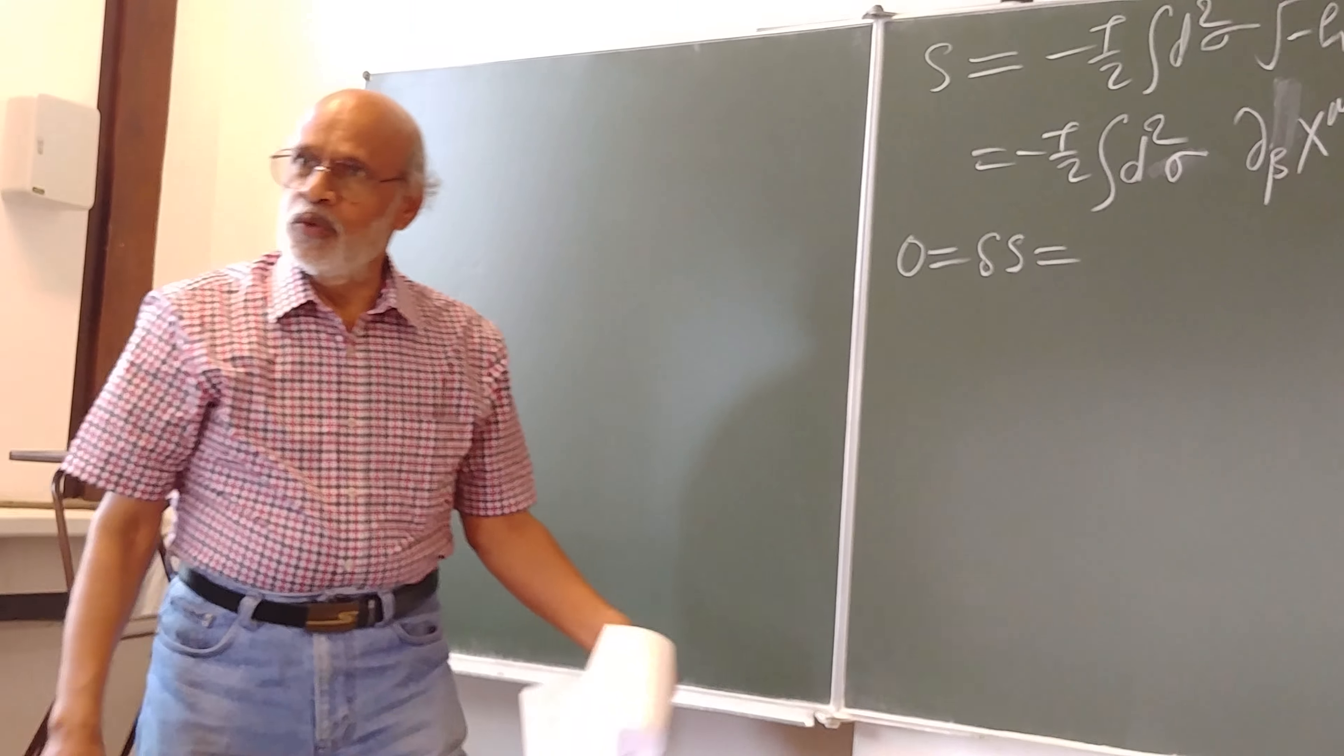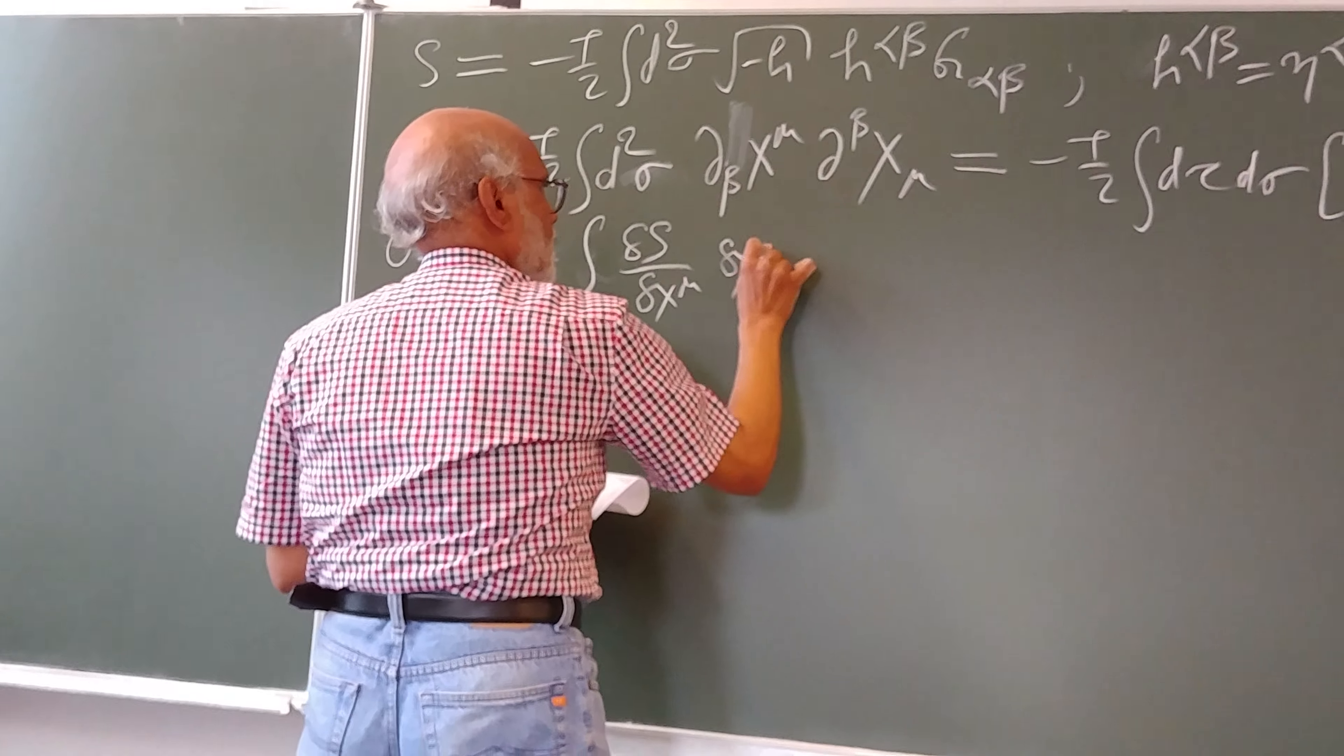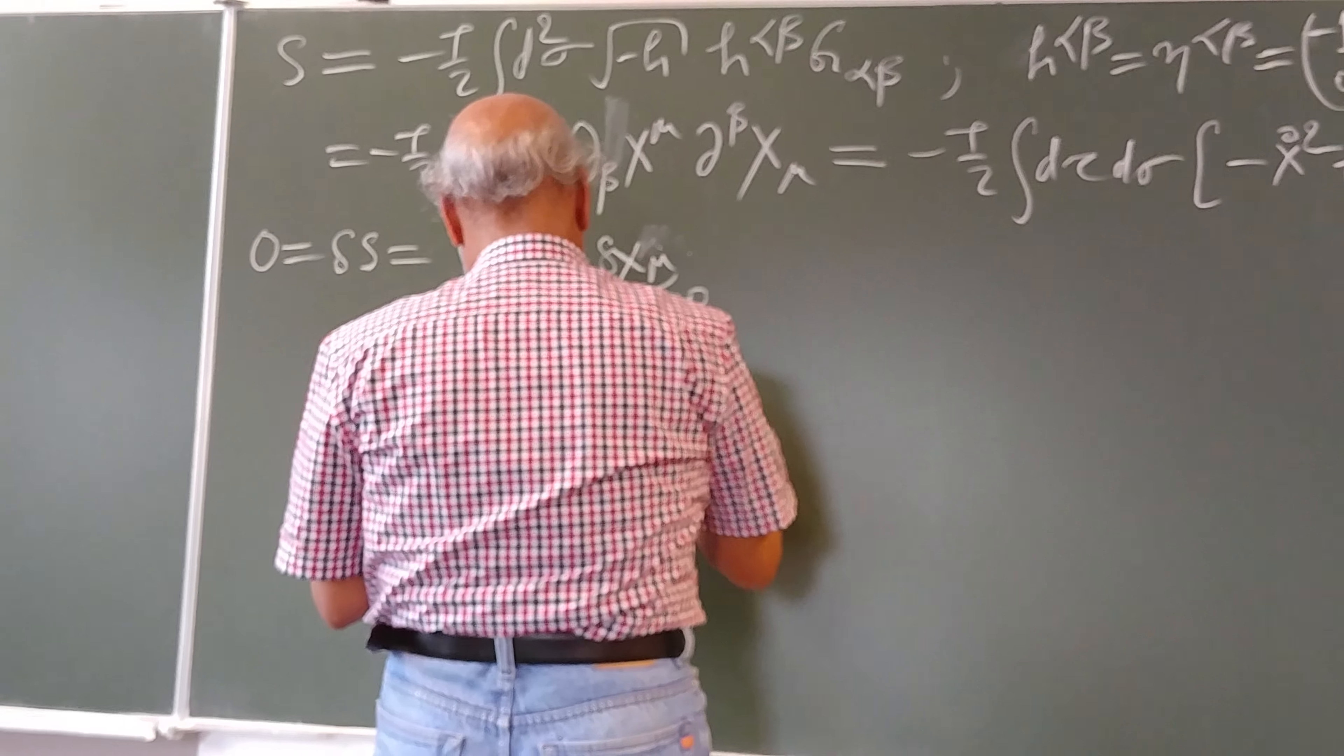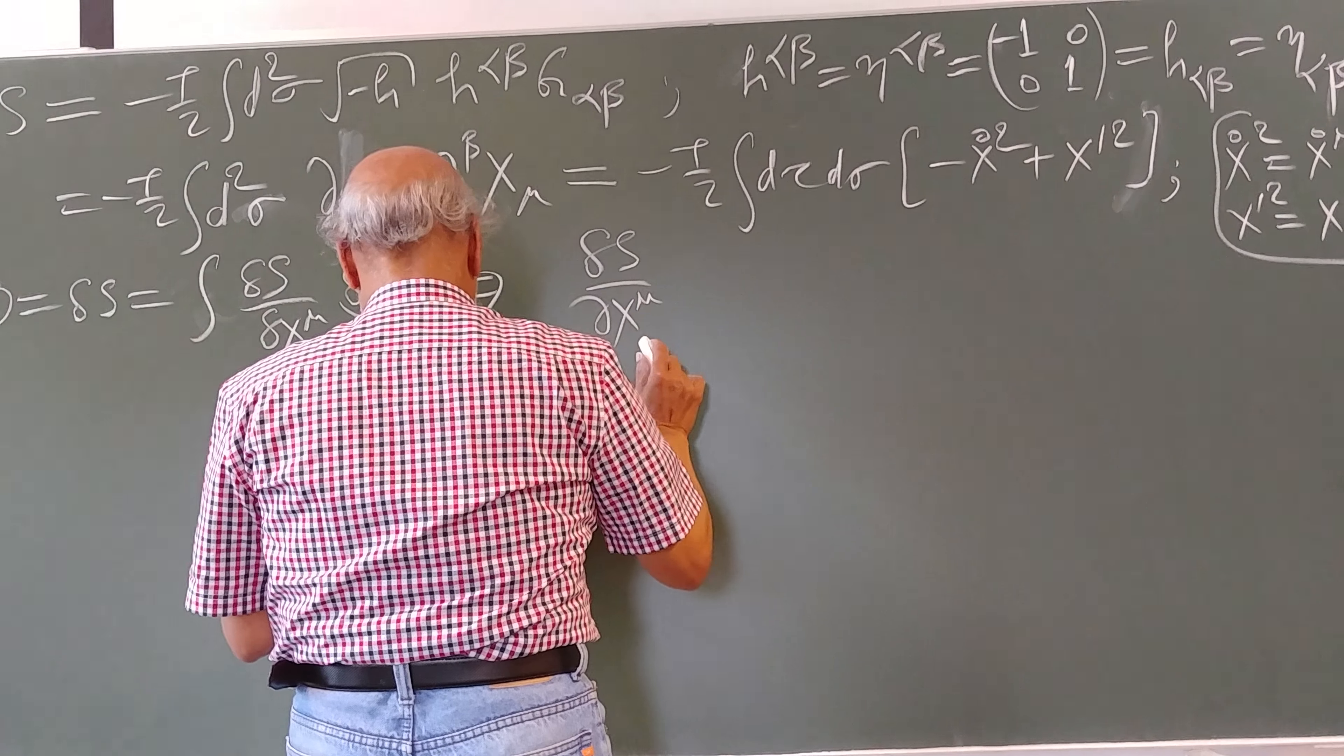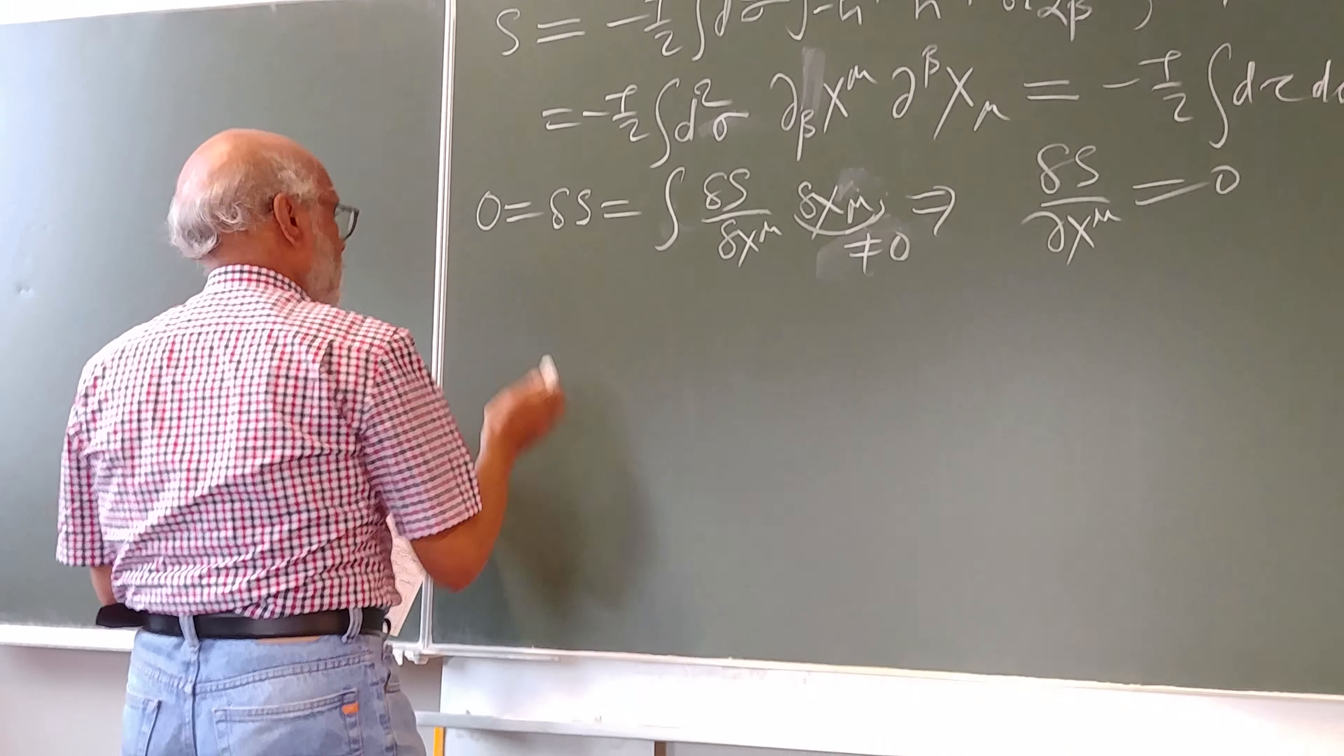Okay and now so the point is now we want to have the variational principle we want to make use of and this gives us delta of delta x mu and or delta x mu and because this guy is non-zero we have or we could this is non-zero therefore we have delta S over delta x mu.